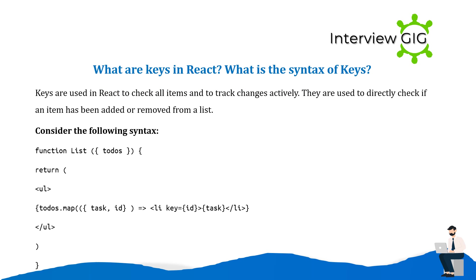What are keys in React and what is the syntax of keys? Keys are used in React to check all items and to track changes actively. They are used to directly check if an item has been added or removed from a list. Consider the following syntax: function List({ todos }) { return todos.map((item) => <li key={item.id}>{item.text}</li>); }